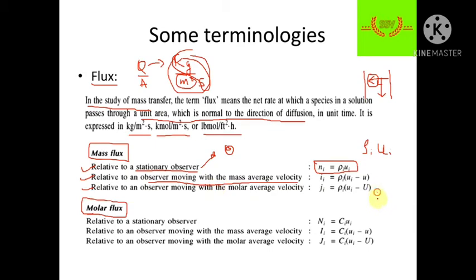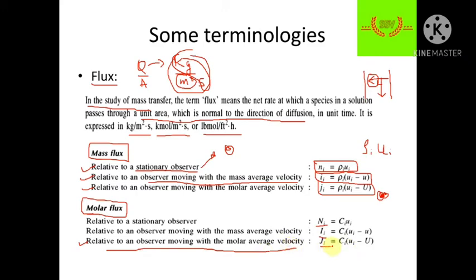Flux is defined in units of kg per meter squared per second, kilo mole per meter squared per second, or pound mole per feet squared per hour. We have two types of flux: mass flux and molar flux. For mass flux, determined using mass average velocity, relative to a stationary observer it is given as rho_i * u_i. For an observer moving with the molar average velocity, the molar flux of species i is J_i = c_i * (u_i - U), where u_i is the velocity of species i and U is the molar average velocity.